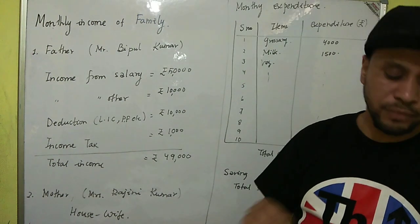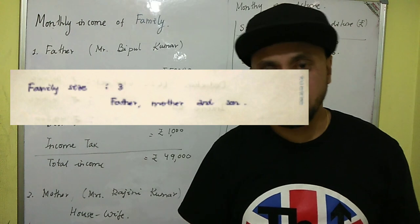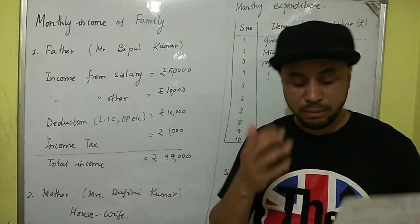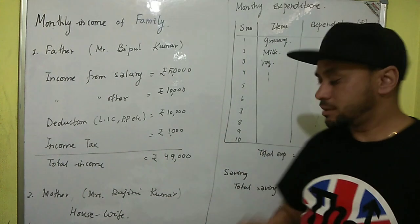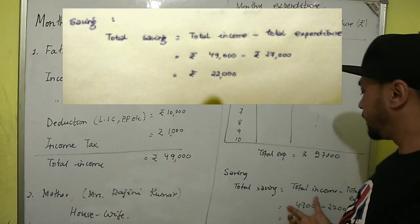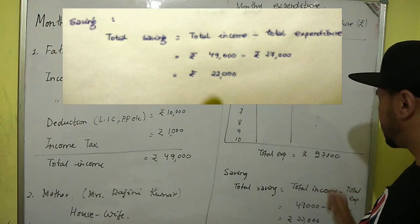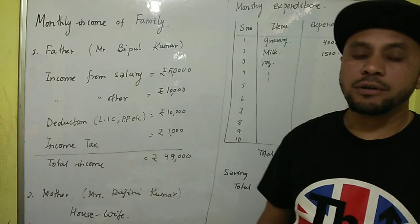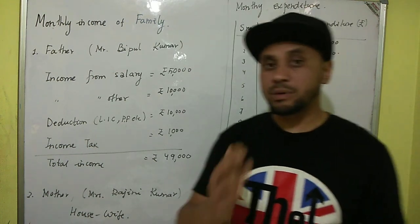The next subheading is Family Size — mention the number of family members. For example, here I have written three: Father, Mother, and Son. Write however many members are in your family. Then comes the most important subheading: Savings. Total Savings equals Total Income minus Total Expenditure. Here, forty-nine thousand minus twenty-seven thousand gives a total saving of twenty-two thousand rupees. That's a good amount, and just imagine how much you can save in one year.